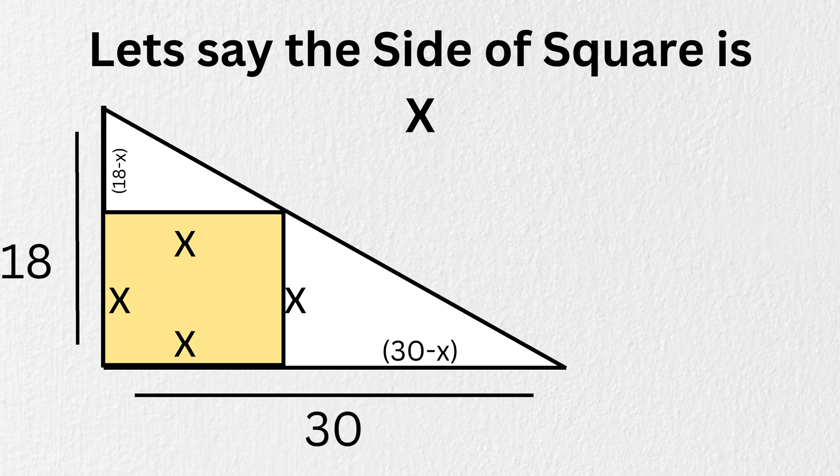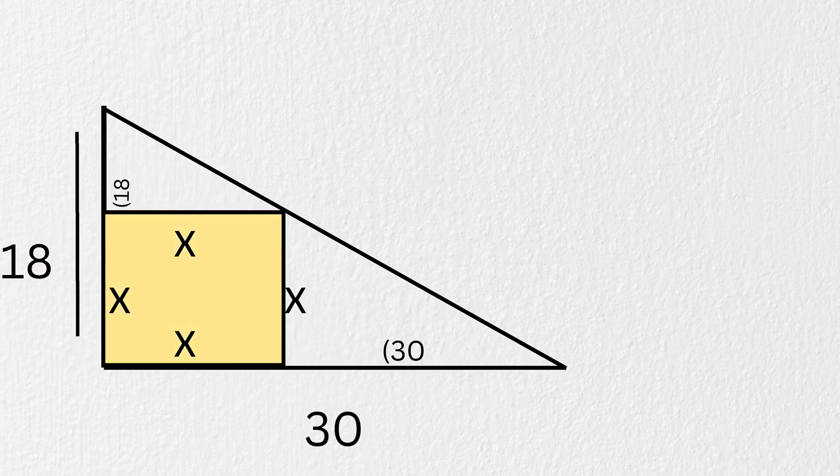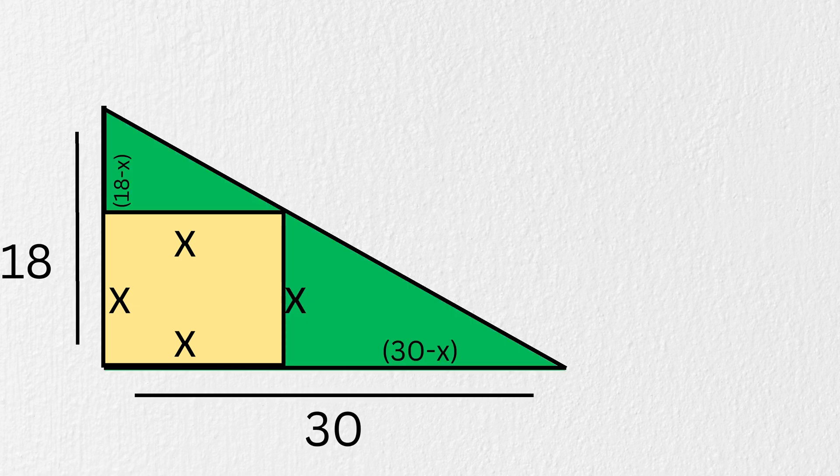Now, here's the part most people miss. We'll look at the two triangles that are formed beside the square. Let's highlight them in green for clarity. Both of these are right angled, and they share a common angle with the big triangle, which makes them similar.